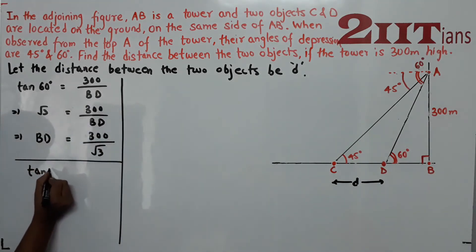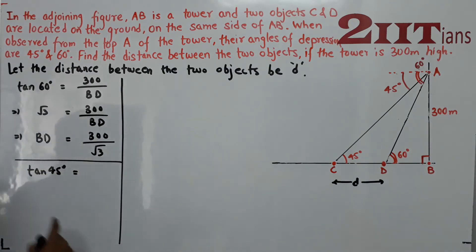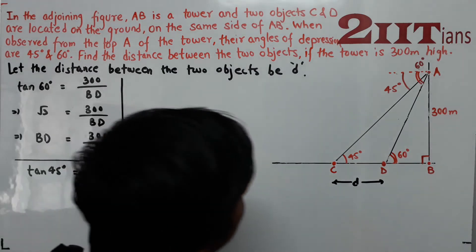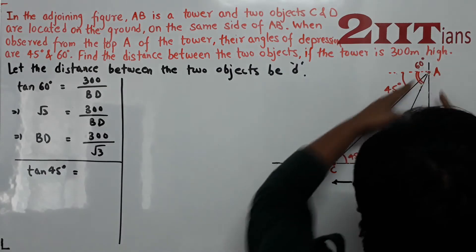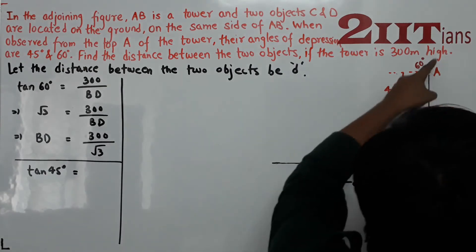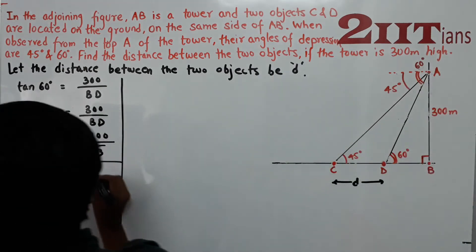Now for the 45 degree angle: tan(45°) = 1, so 300 divided by D gives the second distance calculation.